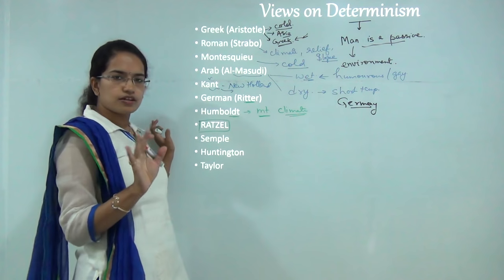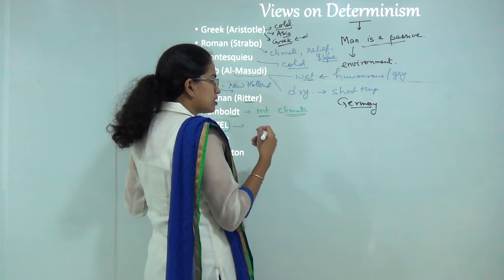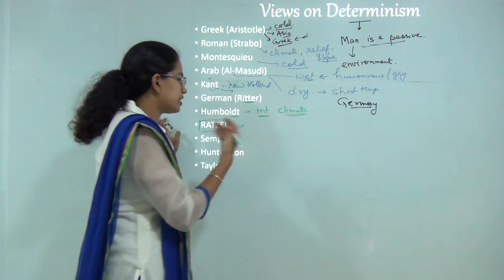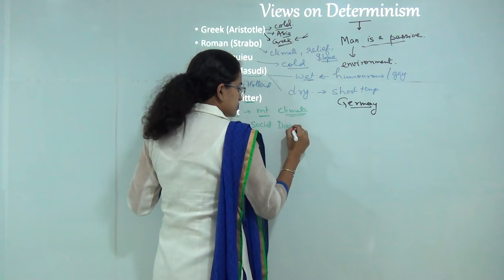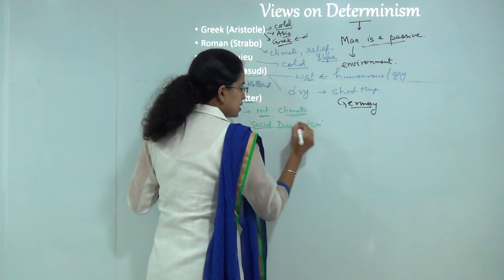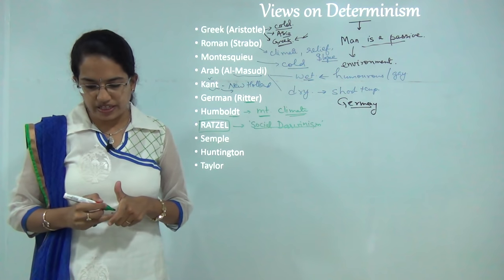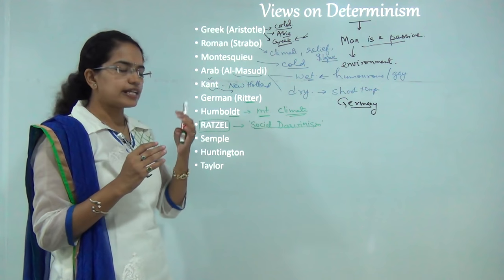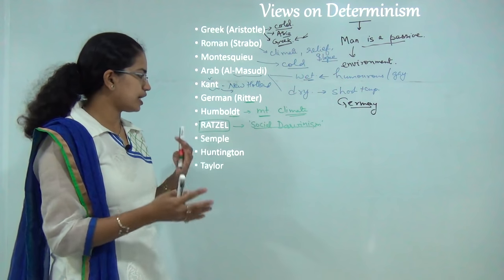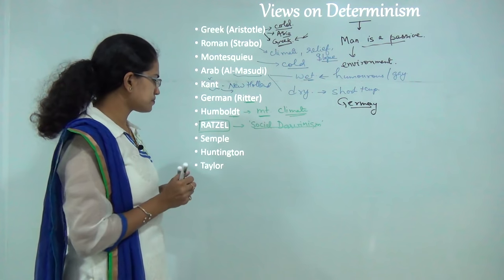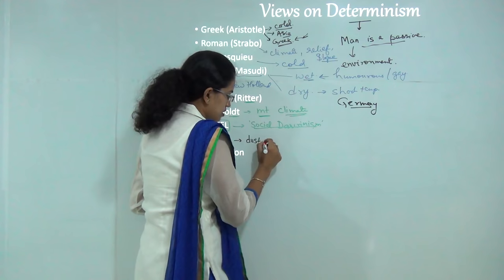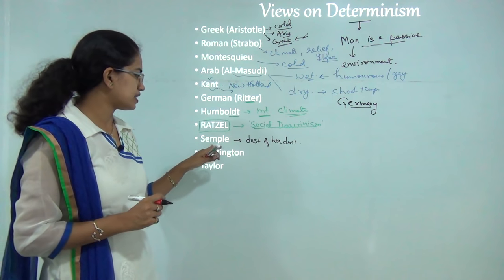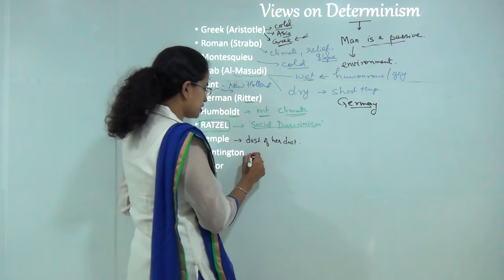Ratzel worked based on the principles of Charles Darwin and, rather than treating it as a purely scientific theory, he laid down a social Darwinism concept. Under this social Darwinism concept, he said man is considered as an organism, and the life of an individual is governed by the area or the state where he is living. Semple considered man as the 'dust of the earth.' We will discuss Semple's famous abstract from her work 'Influences of Geographic Environment' (1911). Huntington again focused on climate variations. And finally, Taylor was considered a transitional figure who moved from determinism to yet another concept known as neo-determinism.